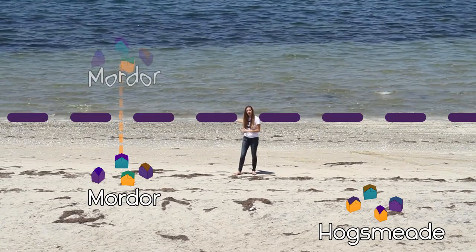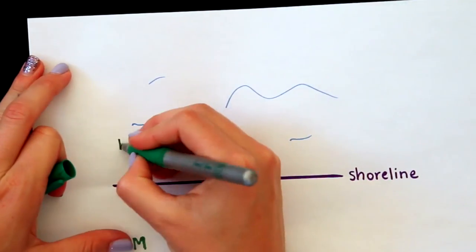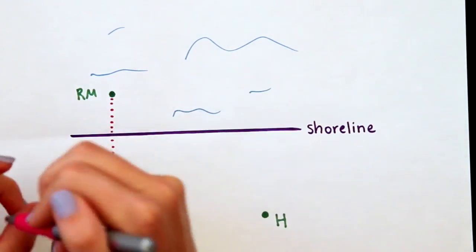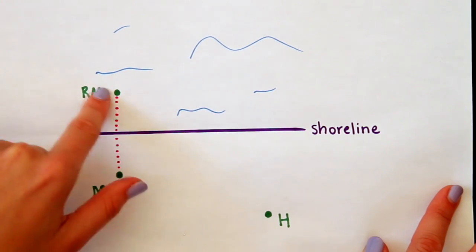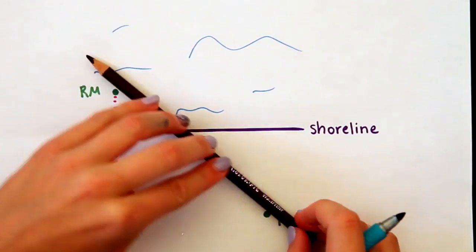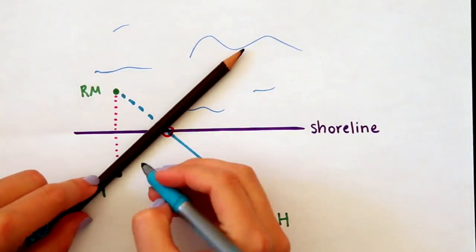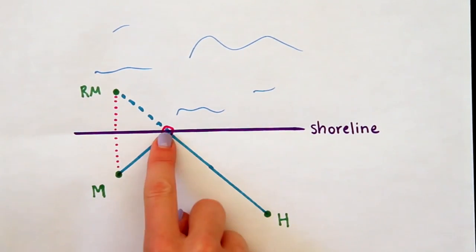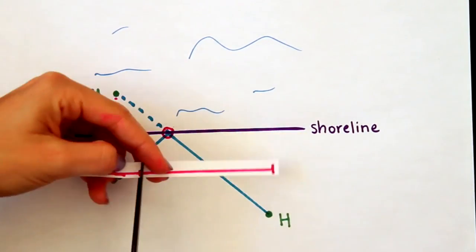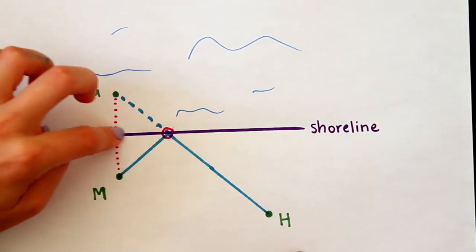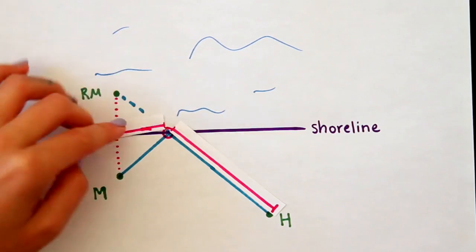Imagine I took Mordor and reflected it across the shoreline. I'm going to fold the paper over at the shoreline so that the distance from Mordor to the shoreline and from the shoreline to reflected Mordor are the same. Now if we want to find the minimum distance between Hogsmeade and reflected Mordor, that's easy — the shortest path between two points is a straight line. And now we have a potential location for a pier. We can show that the straight line distance is actually the same because this side of the triangle is shared and these two distances are equal. Therefore, by similar triangles, this distance must be the same as that one.